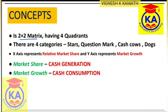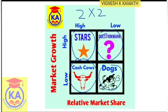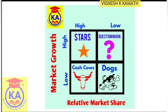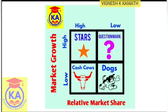BCG matrix is a two-by-two matrix having four quadrants. It has four quadrants — two rows and two columns. There are four categories: Stars, Question Mark, Cash Cows, and Dogs.